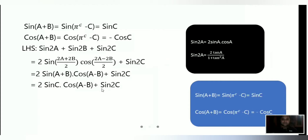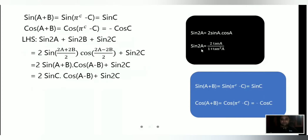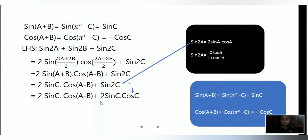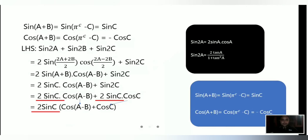Now we handle sin2C. We need to expand sin2C using a formula that lets us factor out 2sinC. The formula sin2A = 2sin(A+A) — i.e., sin2C = 2sin(C+C) — allows us to take 2sinC common. Using this, sin2C = 2sinC·cosC. After factoring, we have 2sinC times the quantity cos(A-B) plus cosC.